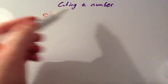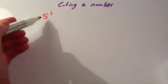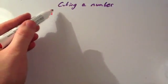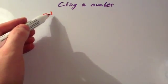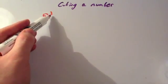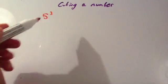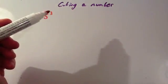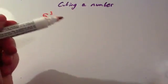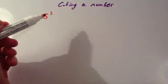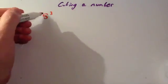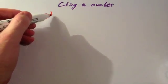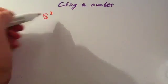We're going to look in this video at cubing a number. So I've written down 5 cubed. This symbol here, the superscript 3, is the cube symbol. Look at the video on squaring a number to see the number for squared. Cubed is very similar. So this is the base number 5 and this 3 saying cubed. So it's 5 cubed.